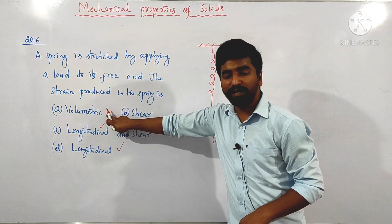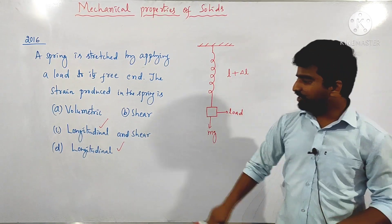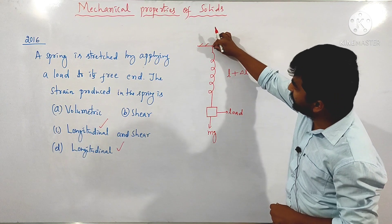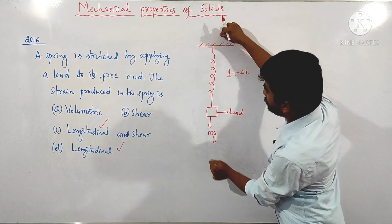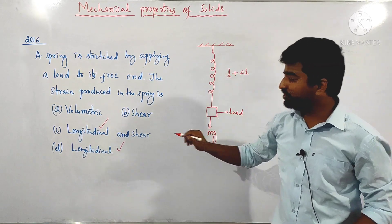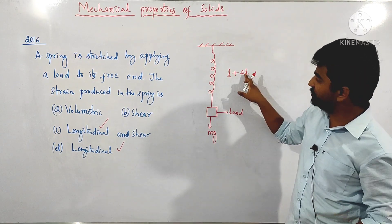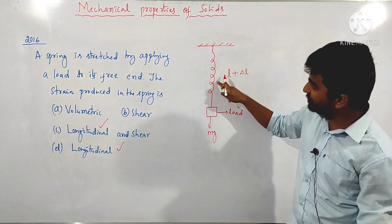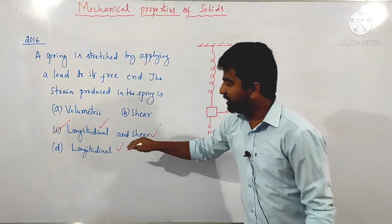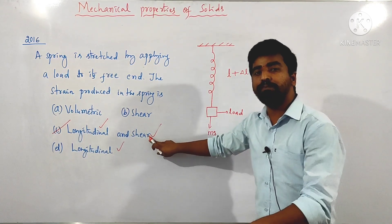Volumetric stress is nothing but hydraulic stress — there is no change in volume here, only change in length. Shear stress relates to change in shape. When the load is attached to the free end of the spring, the spring stretches and its shape also changes. So there will be a change in length as well as a change in shape. Therefore, the answer for the question is longitudinal strain as well as shear strain.